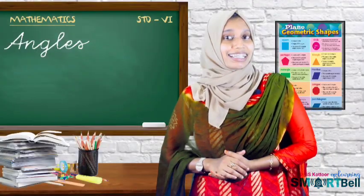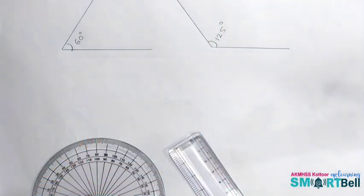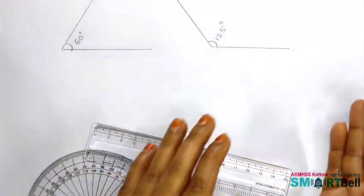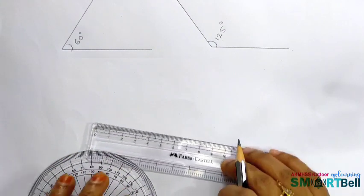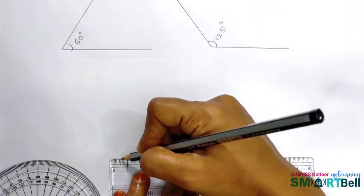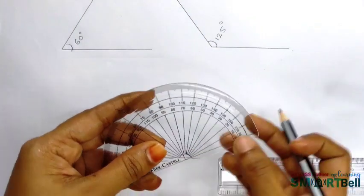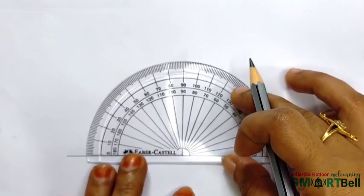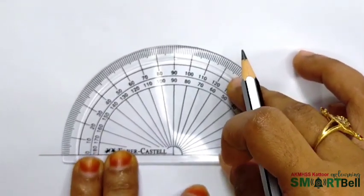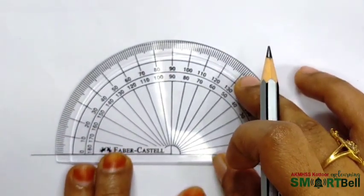Now we make it a little interesting. We will try one more example. Now, I am going to draw a left side angle. Draw an angle of 80 degrees. See what we do? First, draw a line with a scale. After that, place the center point of the protractor on this side. I am going to draw a left side angle. That way, I will place the protractor here.